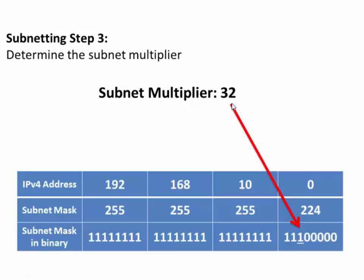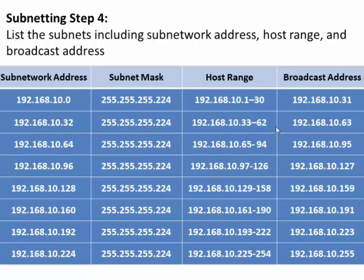This means the subnets will go up by 32, with the first subnet always being the 0 subnet. Starting with the initial subnet of 0, all other subnets go up by 32. In Step 4, the first subnet is the 10.0 subnet, the second is 192.168.10.32, then 64, 96, 128, 160, 192, and 224. Notice how the subnets go up in increments of 32. The subnet mask is a /27, which is 255.255.255.224.